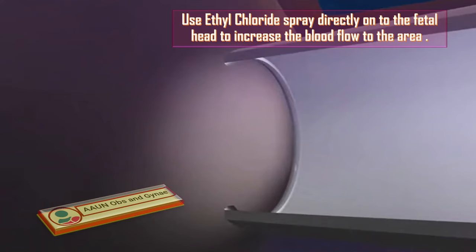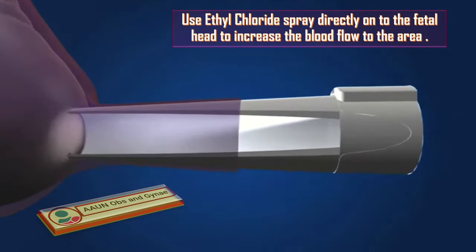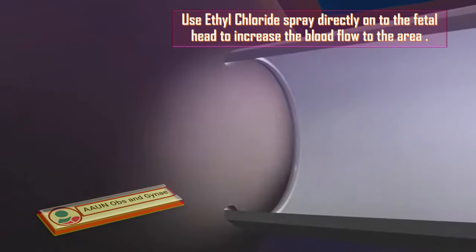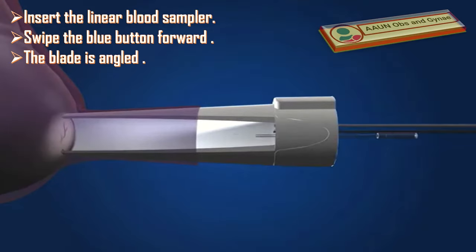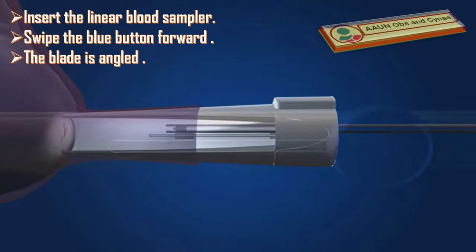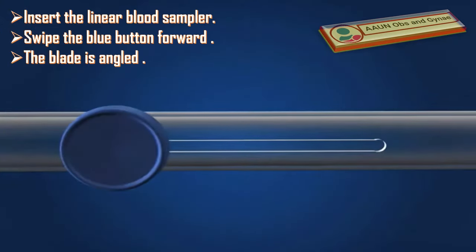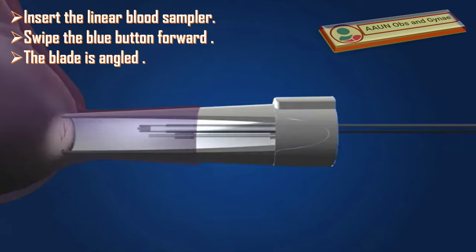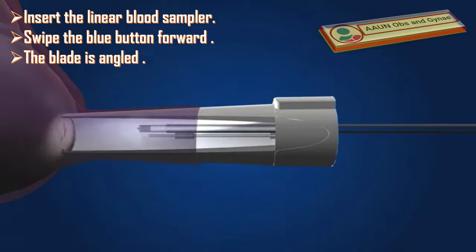Spray ethyl chloride directly onto the fetal head. This ethyl chloride is used on the baby's scalp to increase the blood flow to the area and to numb the area. Insert the linear blood sampler through the amnioscope, and when halfway towards the scalp is reached, swipe the blue button forward to extend the blade.